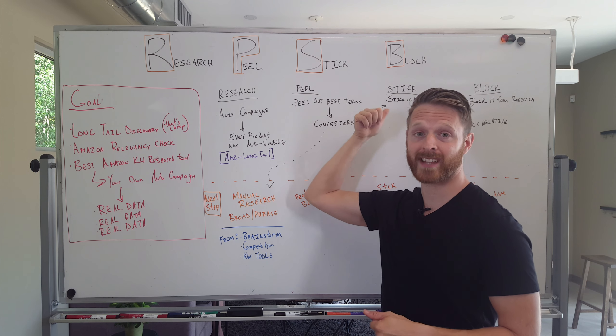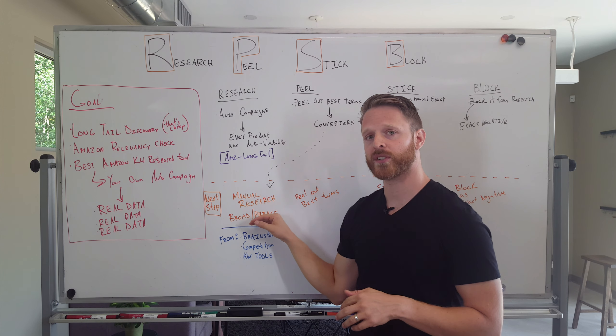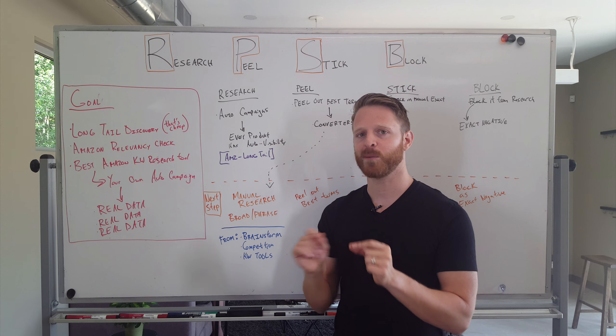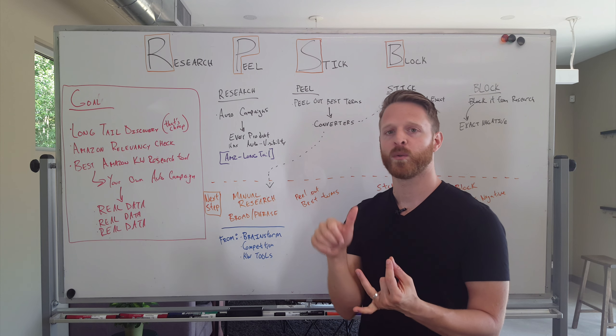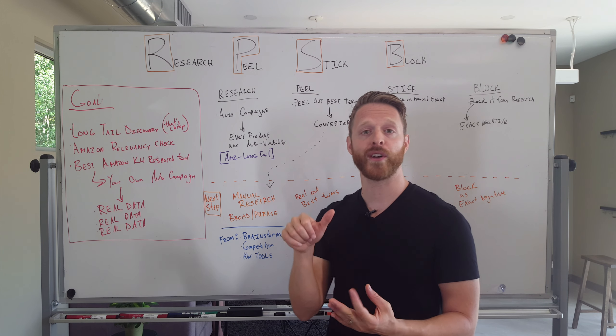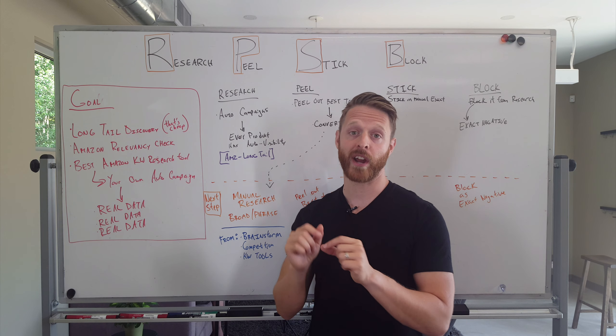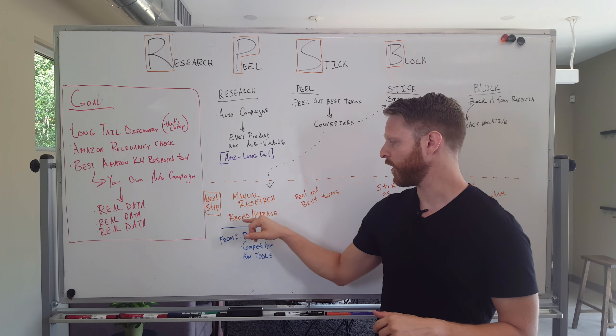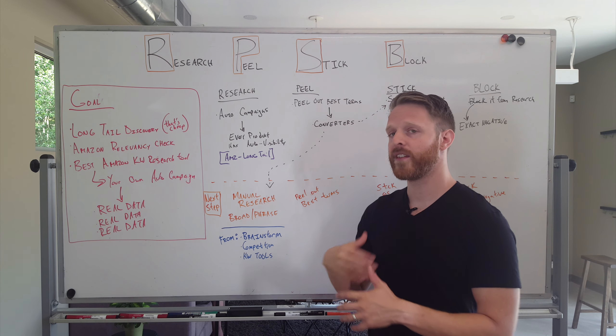And it's really important here - like I'm sort of labeling all my ad groups and my campaign names with automatic, exact match winner's circle, broad, phrase, research. So be sure you're labeling your campaigns and your ad groups as you're doing this, which makes life really easy. So when you do that, you have broad and phrase, and then you're finding more and more long tail terms.